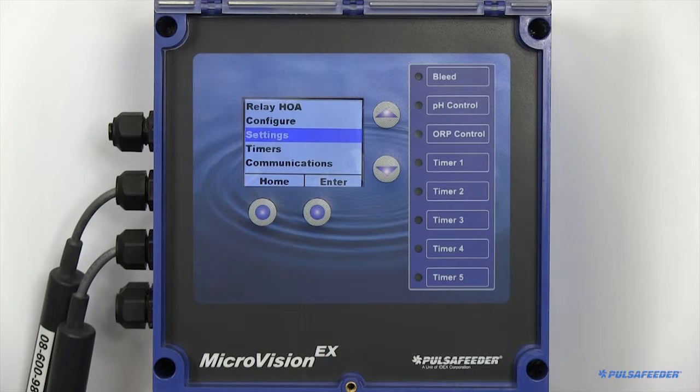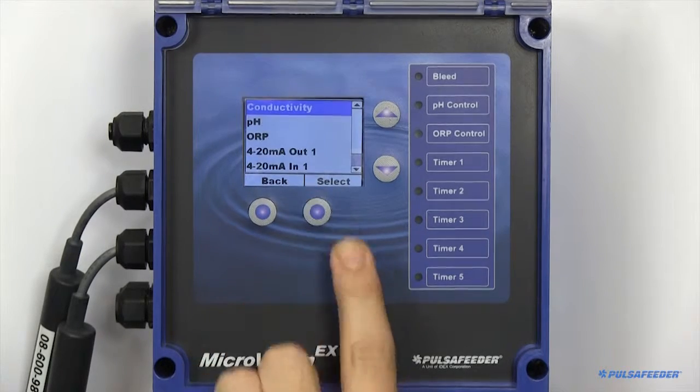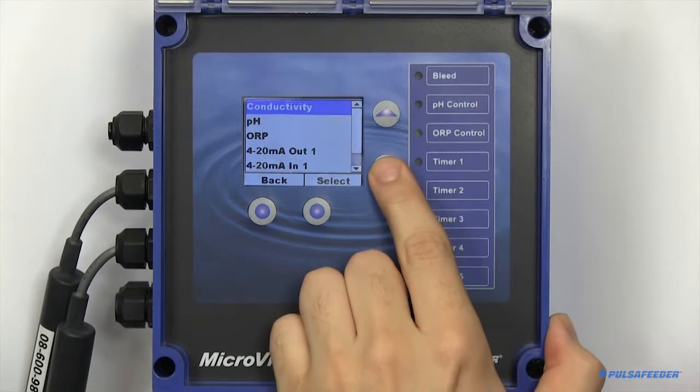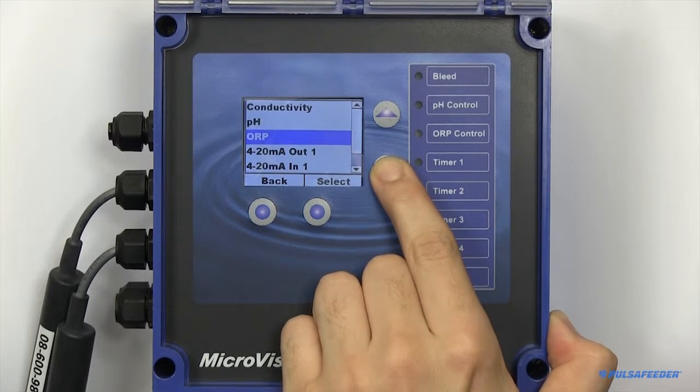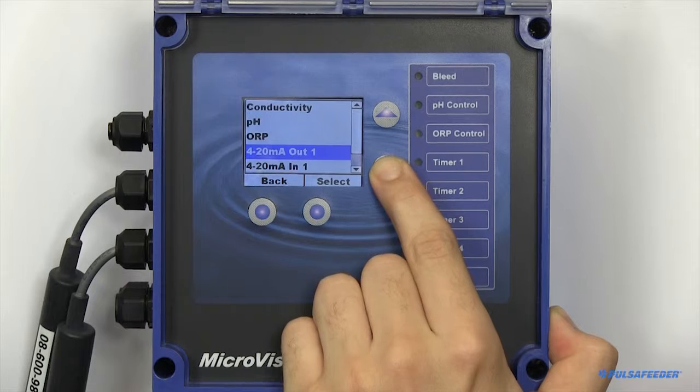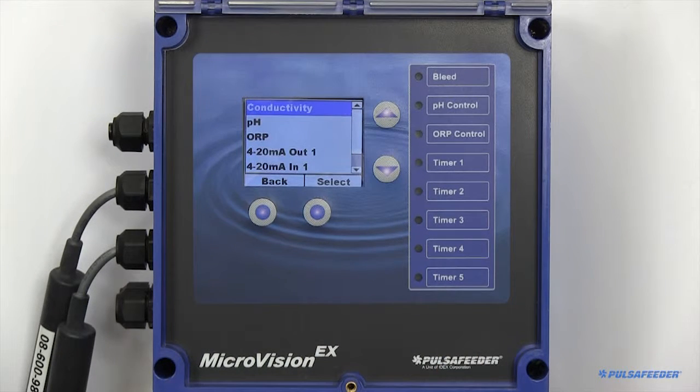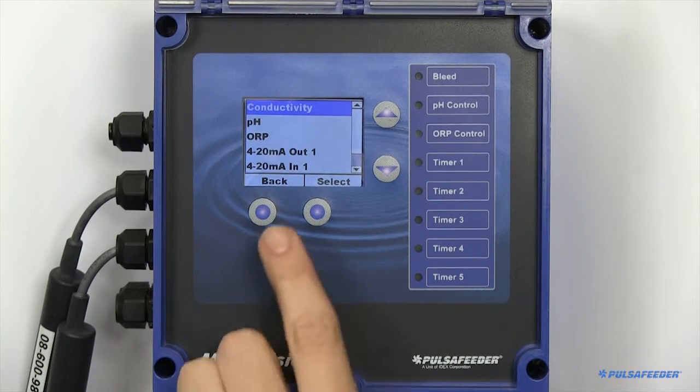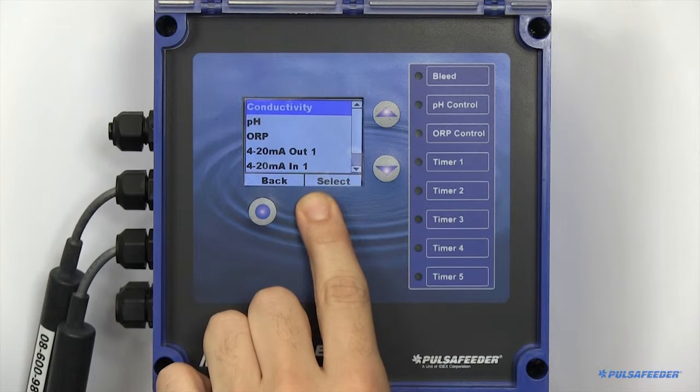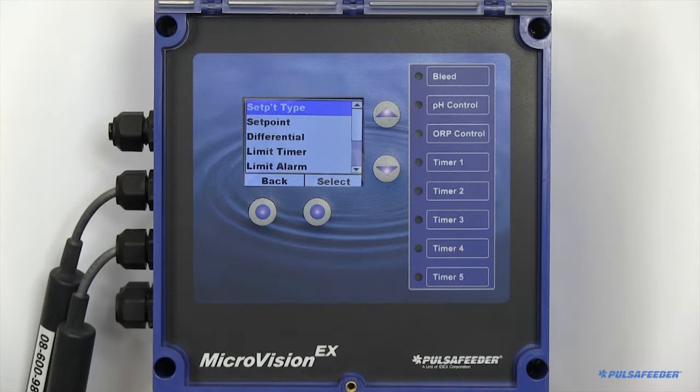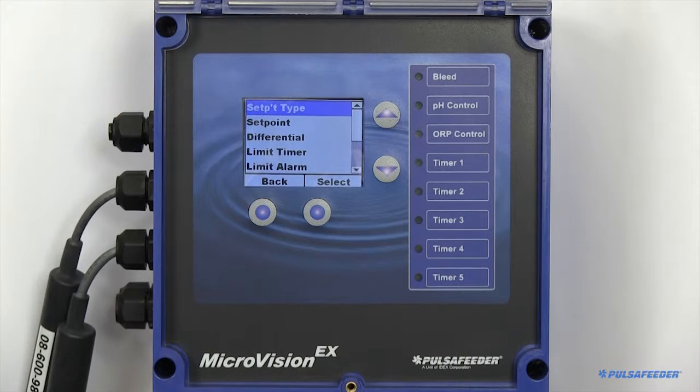The settings page is where you'll configure your probes: conductivity, pH, ORP, and any of your 4-20 peripherals. All probe types are configured the same way. This is an example of how to set up your conductivity probe. The pH and ORP probe will be done identically.